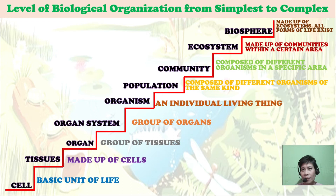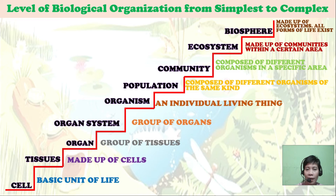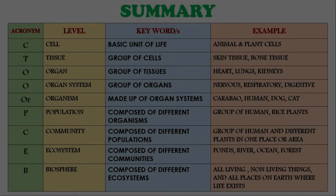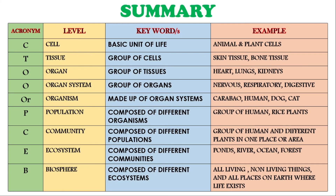The levels of biological organization from simplest to complex are: cell, tissue, organ, organ system, organism, population, community, ecosystem, and the biosphere.